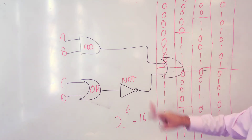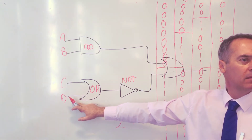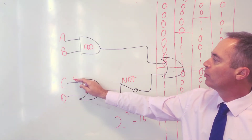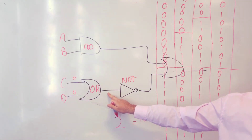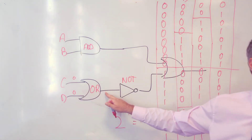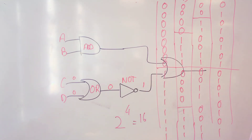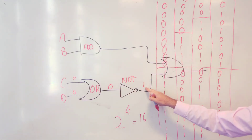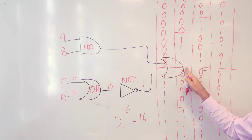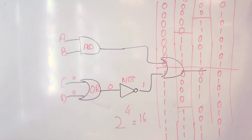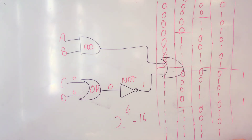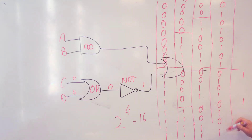Whatever happens here will also happen at the output. So if C and D are zeros, what's going to be at this point? The NOT gate gives a one. So every time C and D are zeros, I've got a one here, which means I've got a one at the output. I go through: wherever C and D are zeros, I give it a one.